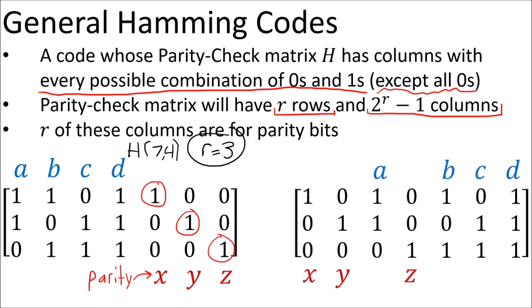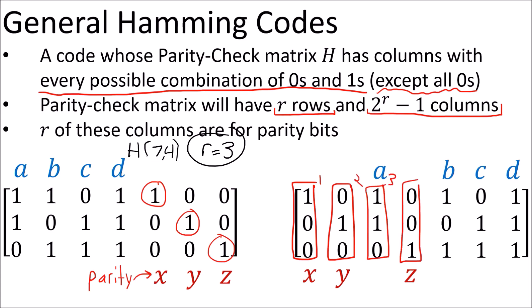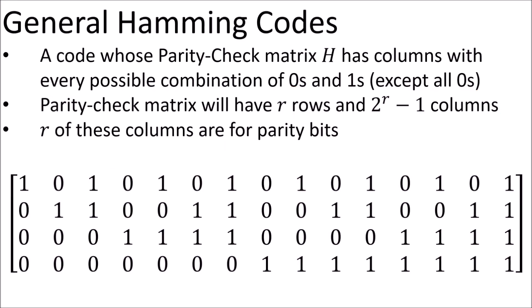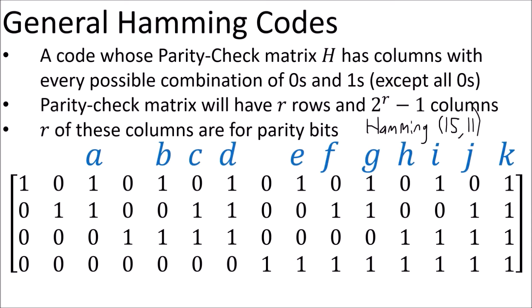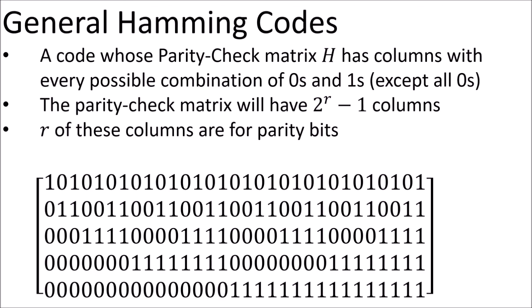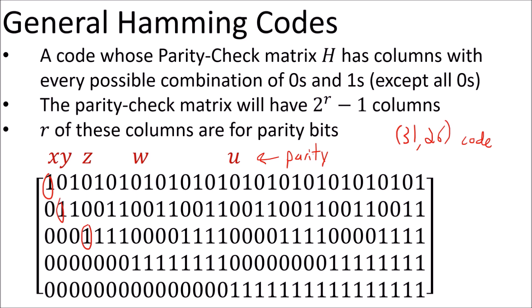Notice that if we rearrange the order of the columns, we end up counting from 1 to 7 in binary from left to right. If instead of counting from 1 to 7 in binary we count from 1 to 15, we get the parity check matrix for the Hamming 15-11 code, where there are 15 columns, 11 of which give us the syndrome vectors for the message bits and 4 for the parity bits. Similarly, if we count from 1 to 31 in binary, we get the parity check matrix for the Hamming 31-26 code: 31 columns, 26 for the message bit syndrome vectors, and 5 columns for the parity bit vectors — again, the columns with a single 1.